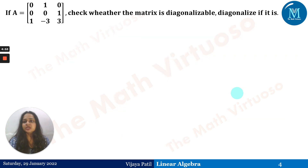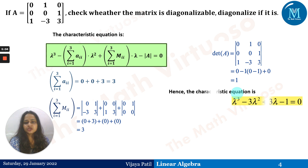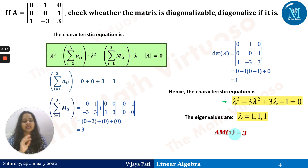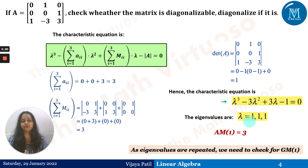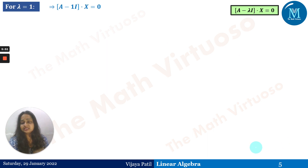Moving to the next example, which is slightly different. Computing the summation of a_ii, summation of M_ii, and the determinant gives 3, 3, and 1 respectively. Substituting into the characteristic equation gives λ³ − 3λ² + 3λ − 1 = 0, so λ = 1, 1, 1. The algebraic multiplicity of λ = 1 is 3. We now need to check if the geometric multiplicity of λ = 1 also equals 3.